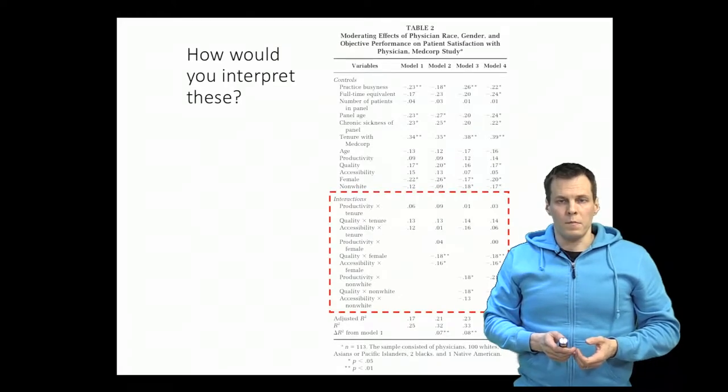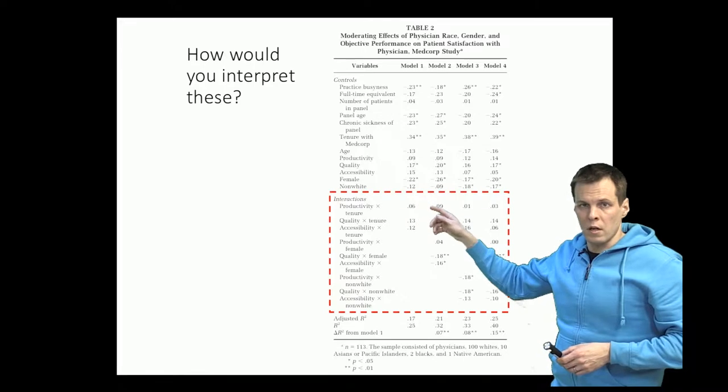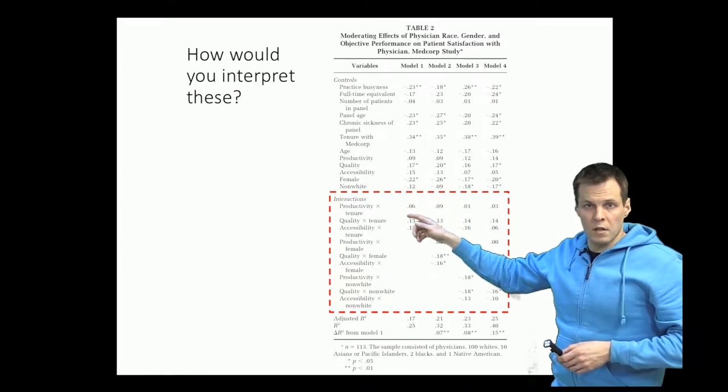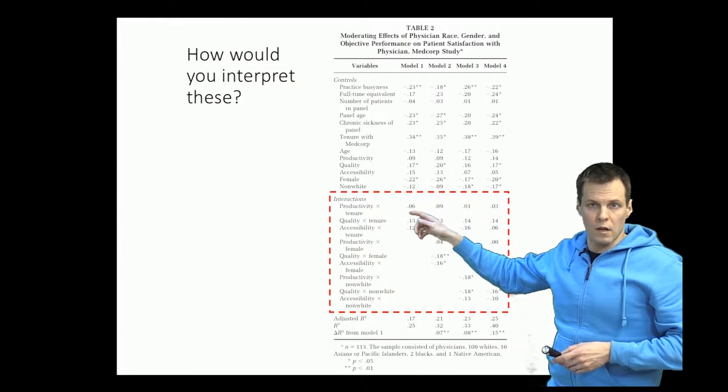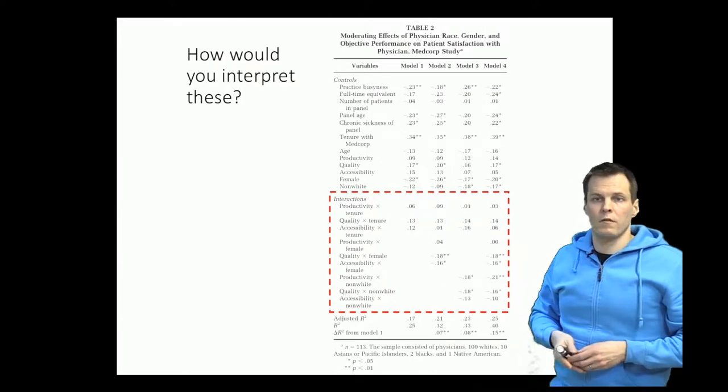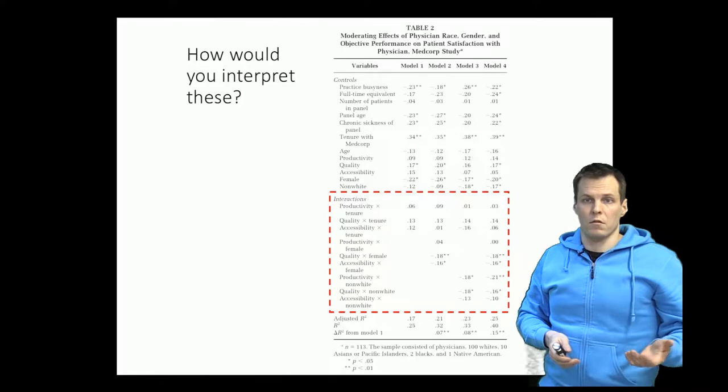In Heckman's paper they have lots of interactions here and let's start with the interpretation of this first interaction coefficient which is productivity and tenure. So we multiply productivity and tenure together we get a regression coefficient.